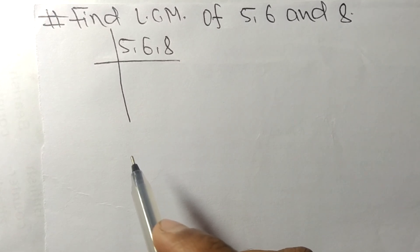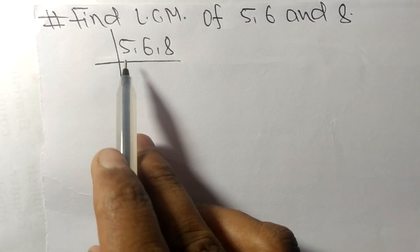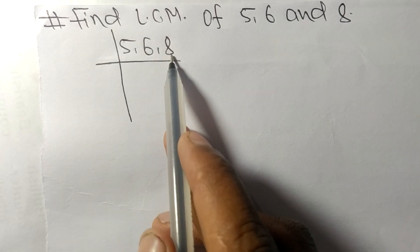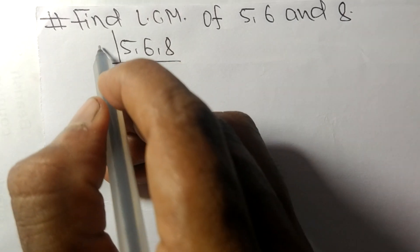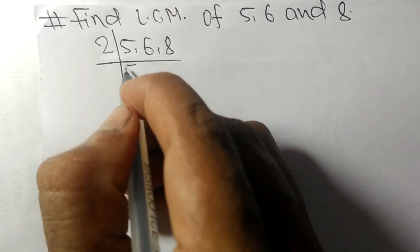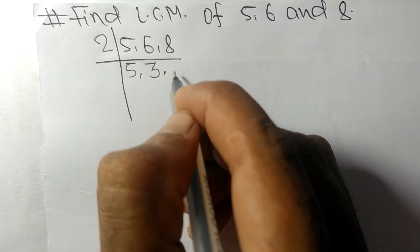To find the LCM, we have to choose the lowest number that can exactly divide any two of these numbers. 6 and 8 are exactly divisible by 2, while 5 is not divisible. So 5 stays the same, 6 divided by 2 equals 3, and 8 divided by 2 equals 4.